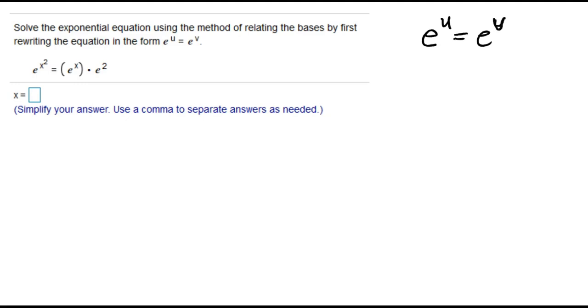Once we get it written in this format, we can say that the exponents have to be equal to each other. So because the bases are the same, the exponents have to be equal to each other, so it allows us to simplify from an exponential equation to a nicer type of equation. So let's try that with this example.